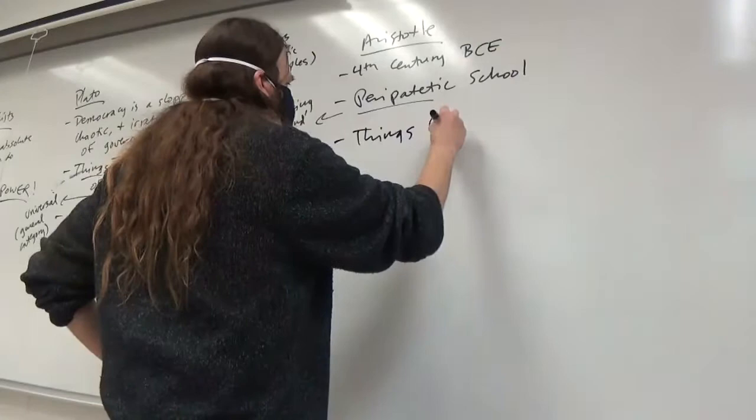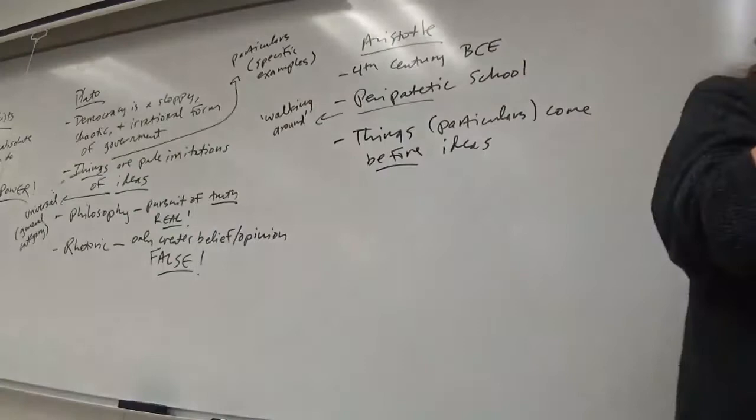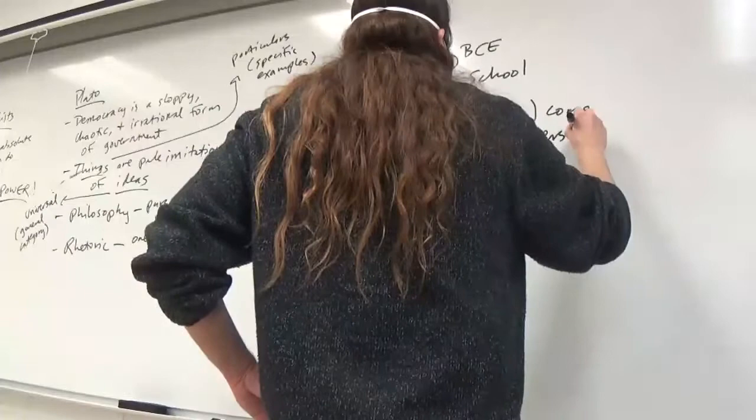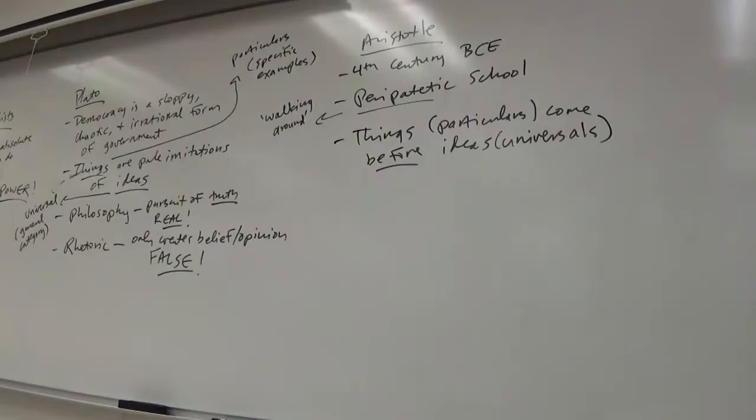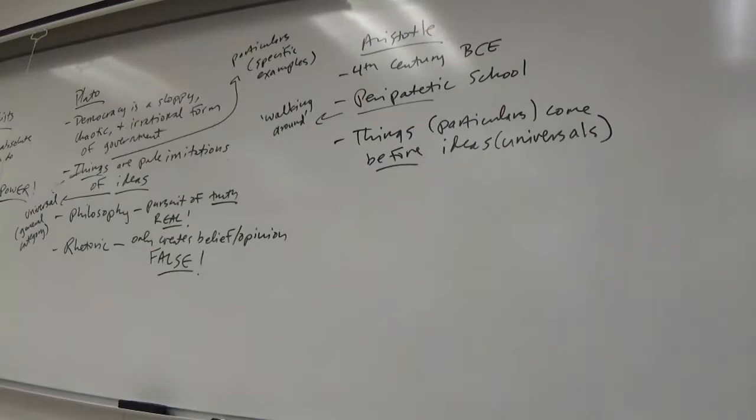Aristotle says that you can't understand a universal, you can't form a general category unless you know what belongs in that category. So you have to study the particulars first in order to come up with a universal principle. So for Aristotle, things or particulars come before ideas or universals. So Aristotle and the peripatetics are really into describing the features of particular things and using that, using similarities and differences to put these things into categories. Which is one of the reasons why Aristotle can be so bloody boring to read.